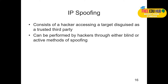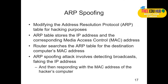IP spoofing consists of a hacker accessing a target disguised as a trusted third party, claiming to be a trusted partner sitting in the middle. It can be performed by hackers through either blind or active methods of spoofing, which we covered earlier.